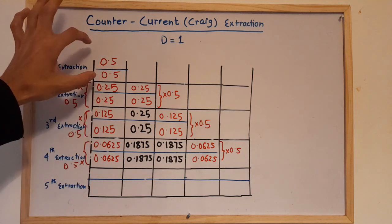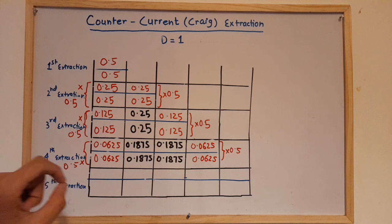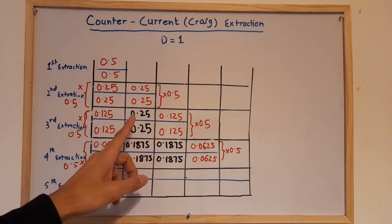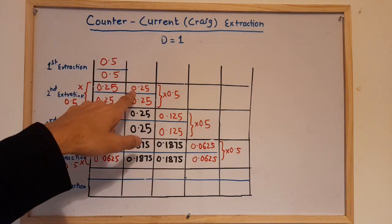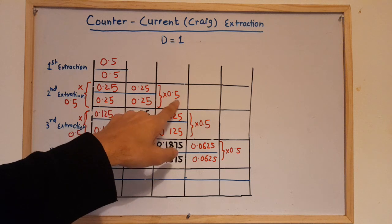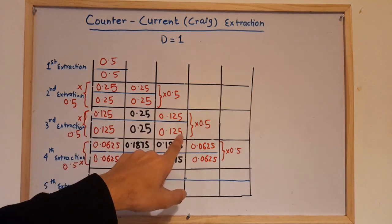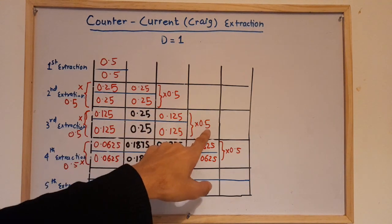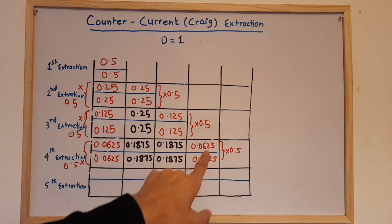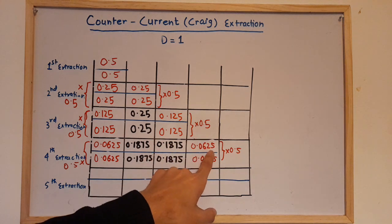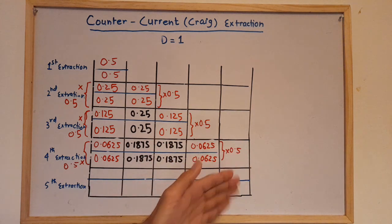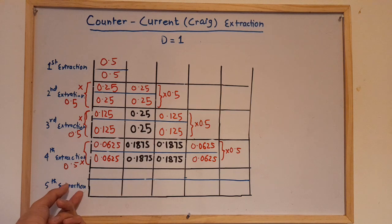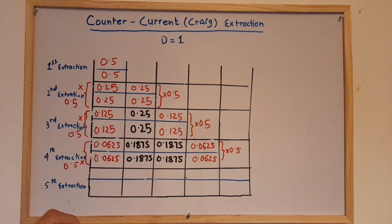On the right-hand side we follow the same steps: 0.25 multiplied by 0.5 gives 0.125, then multiplied again by 0.5 gives 0.0625. For the fourth and fifth extractions, we again multiply by 0.5 and we will get the corresponding values.